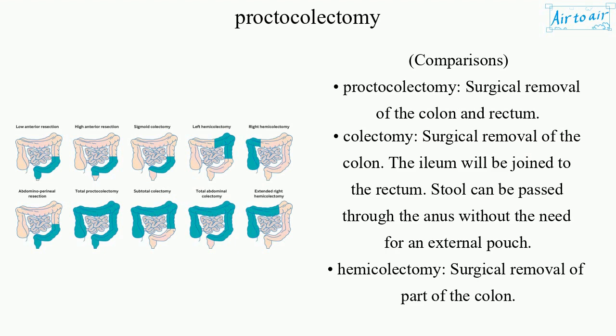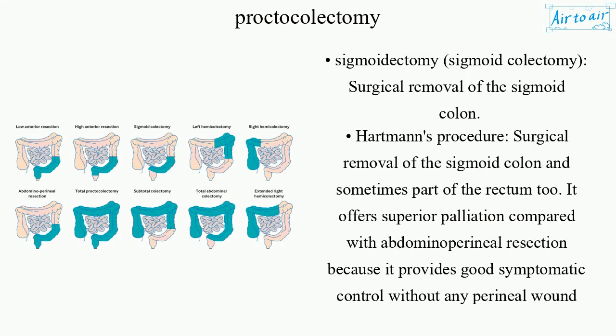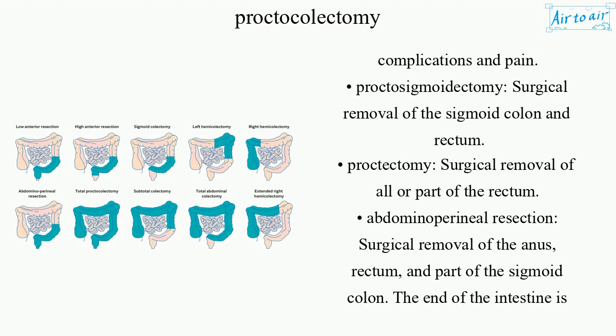Hemocolectomy: surgical removal of part of the colon. Sigmoidectomy, also called sigmoid colectomy: surgical removal of the sigmoid colon. Hartmann's procedure: surgical removal of the sigmoid colon and sometimes part of the rectum too. It offers superior palliation compared with abdominoperineal resection because it provides good symptomatic control without any perineal wound complications and pain.